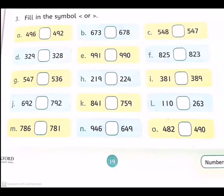Now open your books, page number 19. Question number 3 is fill in the symbol. Part A is 496 and the other number is 492. Both are 400, 490, 90. One is 6 and other is 2. Which is greater? Yes, 6 is greater than 2. So the bigger number will be 496 and crocodile will eat this number.